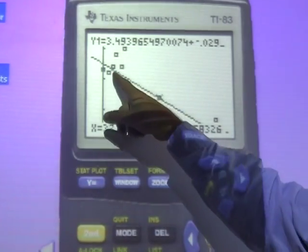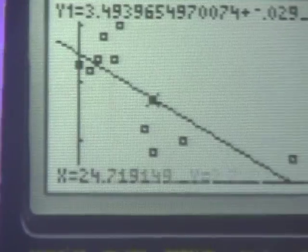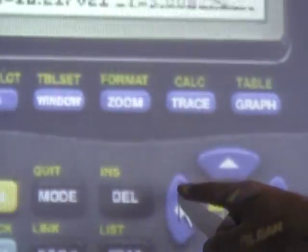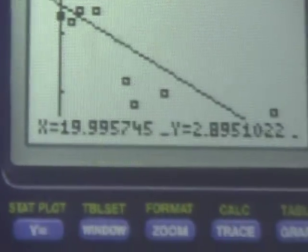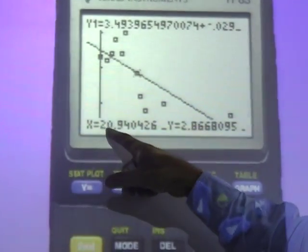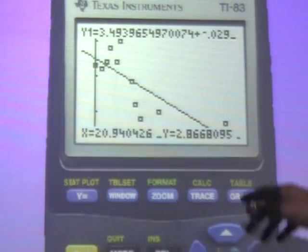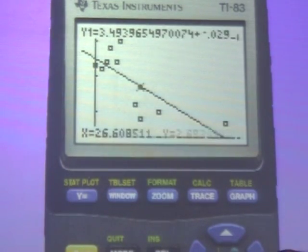Notice now it's on the line. And what this does, it allows us to make predictions of GPAs for a number of days absent. Because this is what our model does. So suppose somebody was absent about 20 days. We expect them to have a GPA of about 2.8. This is actually a horrible model for this data, and we'll talk about why in a minute. It violates one of the assumptions.